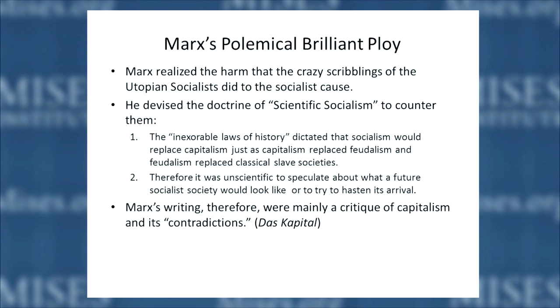So under scientific socialism, you don't speculate about the future. Marx's writings were all a critique of capitalism — his great work was called Das Kapital. He almost never talked about socialism. He made vague allusions to a law of history that would cause socialism to be replaced by communism, and talked about everyone being able to do all different kinds of jobs. He said the average human intelligence would rise above that of an Aristotle or a Da Vinci — but these were off-the-cuff remarks. He gave no systematic statement of what socialism would be or how it would operate as an economic system.